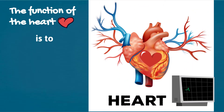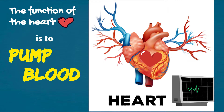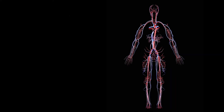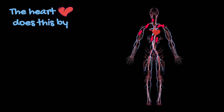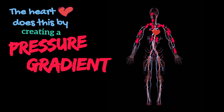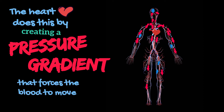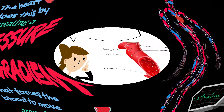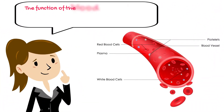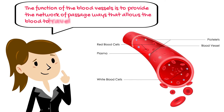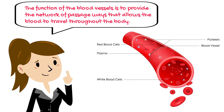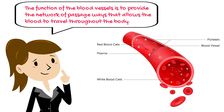The function of the heart is to pump blood around the body. The heart does this by creating a pressure gradient that forces the blood to move through the blood vessels. The function of the blood vessels is to provide the network of passageways that allows the blood to travel throughout the body.